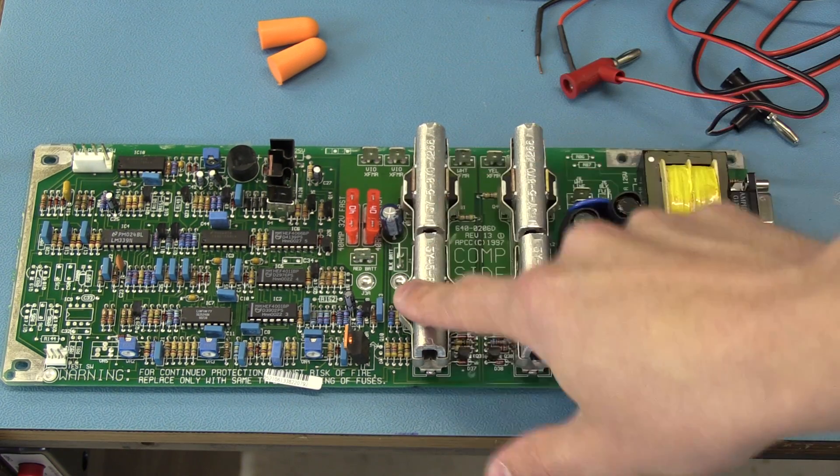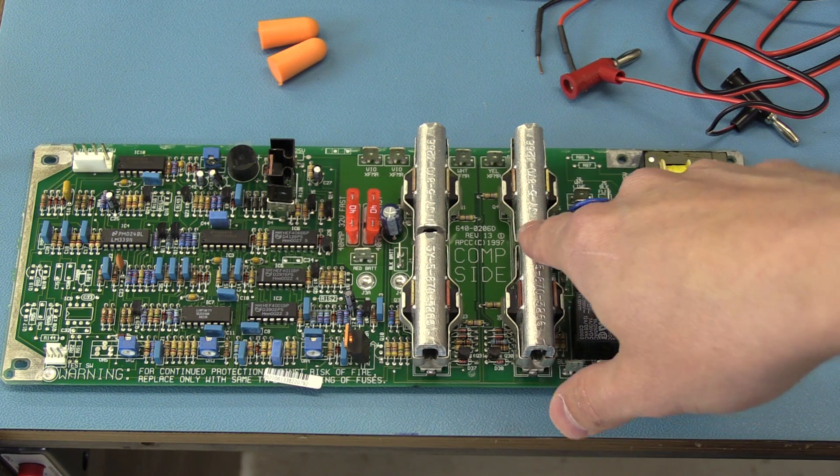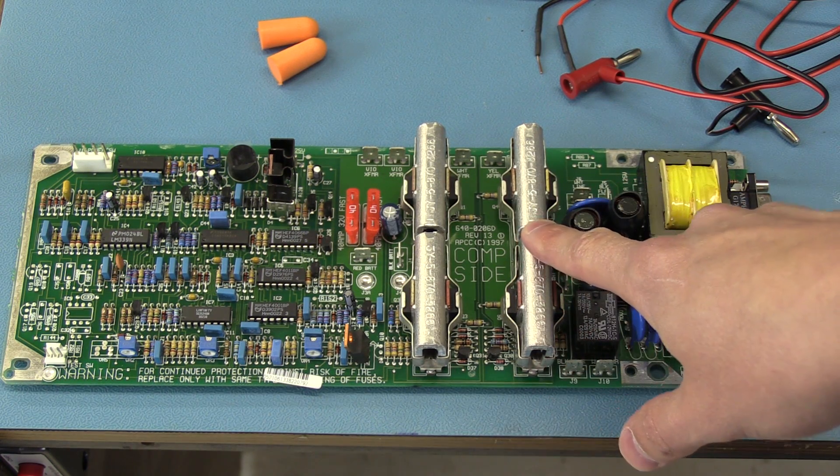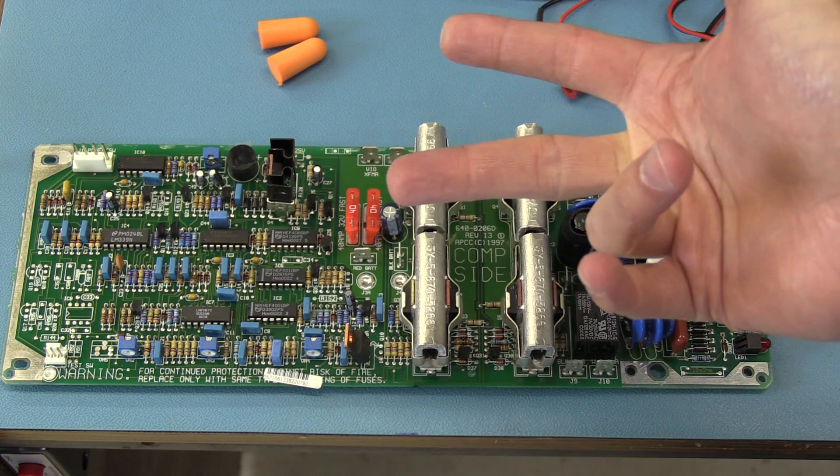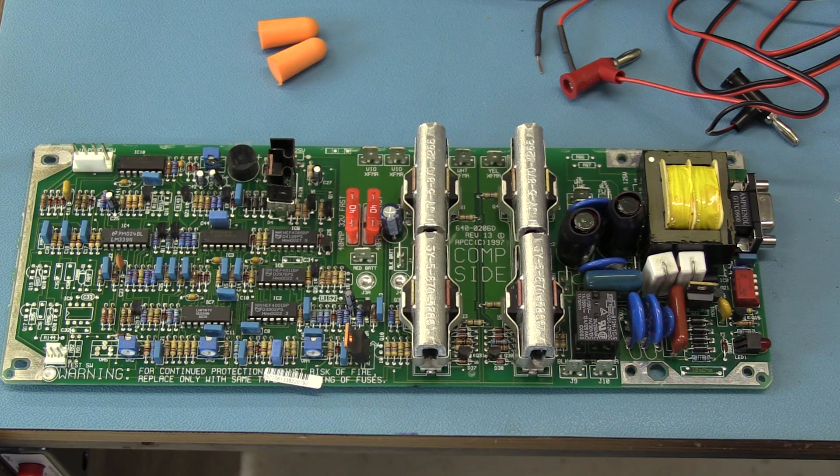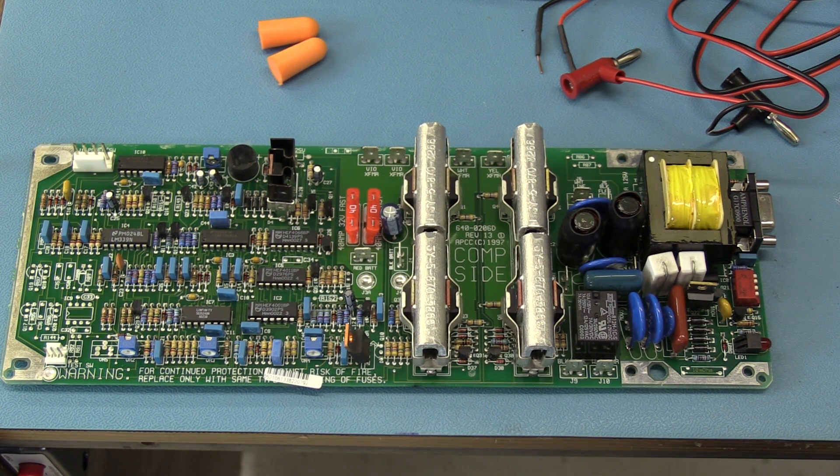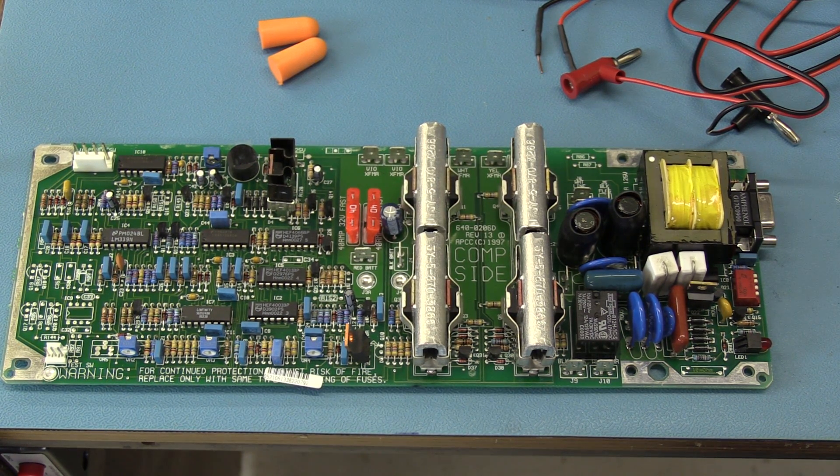These switching elements here on the heat sinks, the MOSFETs I suppose, are going to dump current from the battery into the primary on that big transformer, first one way and then the other. I'm guessing that's what the PWM controller is doing. Do you think it's doing anything fancy like a modified sine wave? I'm not sure I'd count on it.